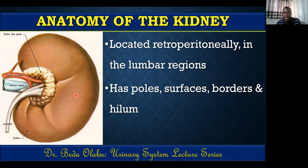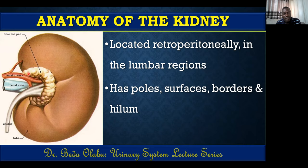Each kidney also has borders. The lateral border is convex. The medial border of the kidney has a region called the renal hilum, which is where structures access the kidney. Going through the renal hilum are the renal artery, the renal vein, the ureter, fat, and nerves — those five elements pass through the renal hilum.